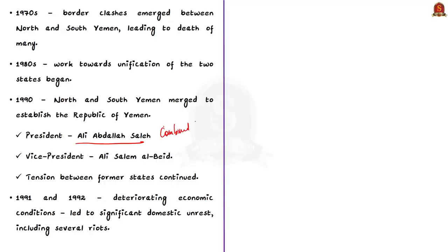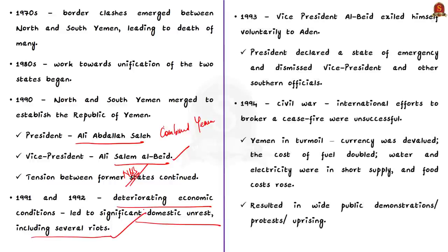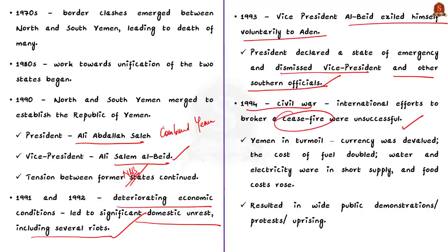Ali Saleh al-Beed from the Southern bloc was made vice president. Though everyone thought that the merger would bring peace, tensions between North and South persisted. In 1991-1992, deteriorating economic conditions led to significant domestic unrest including riots. In 1993, Vice President al-Beed exiled himself voluntarily to Aden in the South bloc. President Saleh declared a state of emergency and dismissed the vice president and other Southern officials. By 1994, the country was in civil war and international ceasefire efforts were unsuccessful.